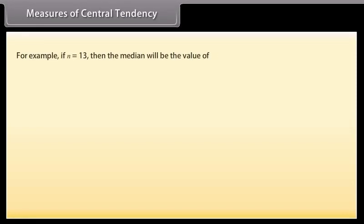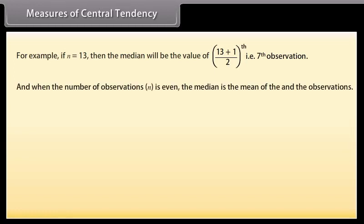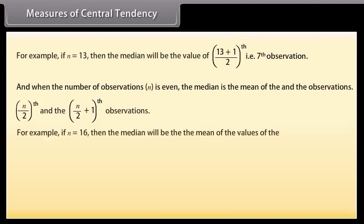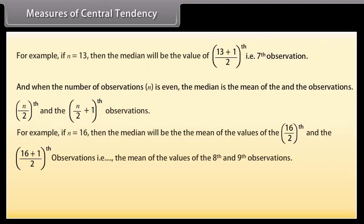For example, if n is equal to 13, then the median will be the value of (13+1)/2, that is 7th observation. And when the number of observations n is even, the median is the mean of the n/2th and (n/2 + 1)th observations. For example, if n is equal to 16, then the median will be mean of the values of 16/2 and (16/2 + 1) observations, that is the mean of the values of the 8th and 9th observations.